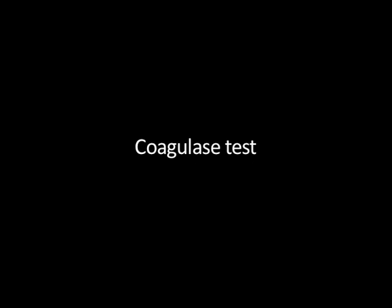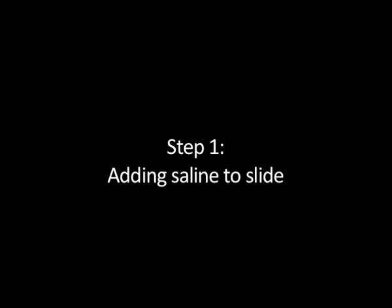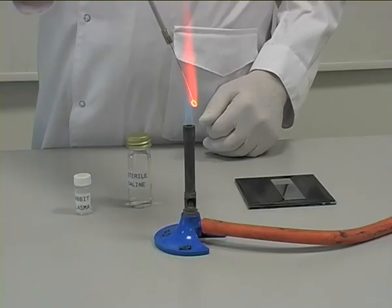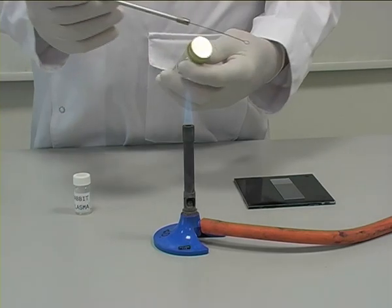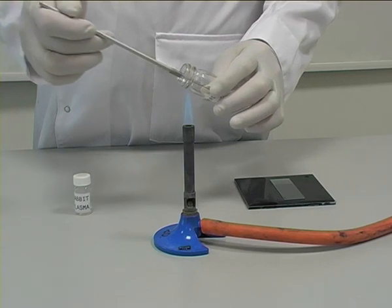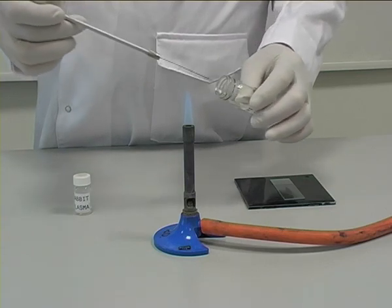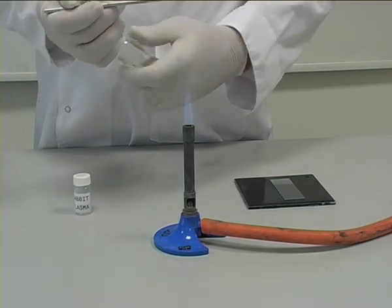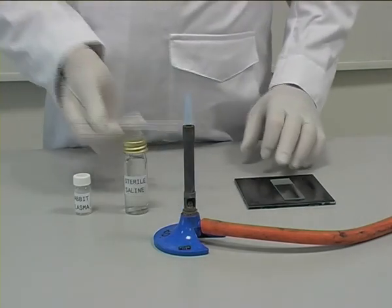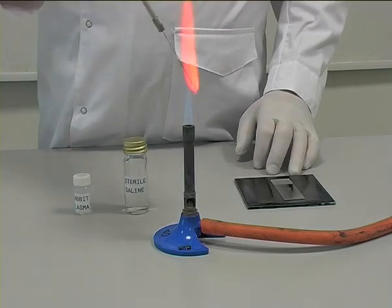Coagulase test. Rabbit plasma is the reagent used to test for the coagulase enzyme. Step 1: Adding saline to the slide. A sterile inoculating loop is used to obtain a drop of sterile saline from a jar. This is then placed on a clean glass slide and the loop is re-sterilised in the blue flame.